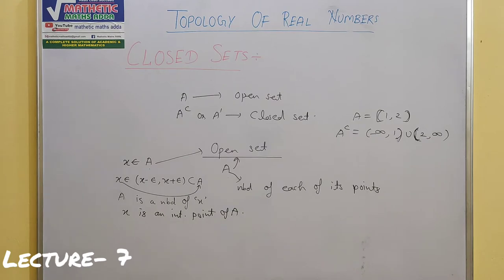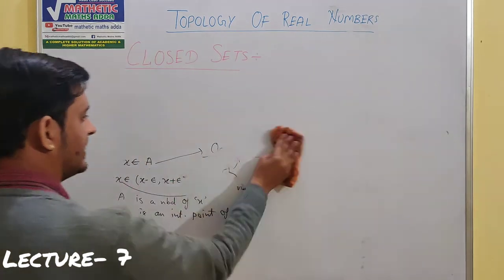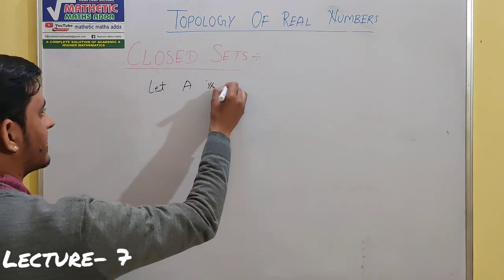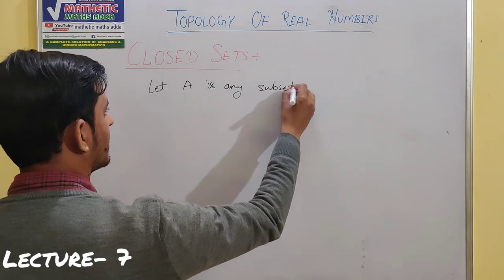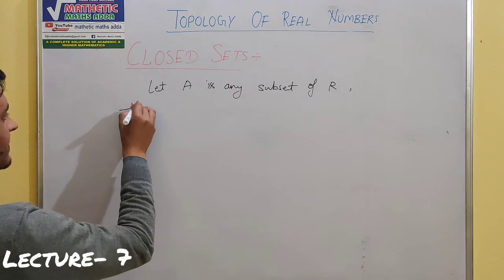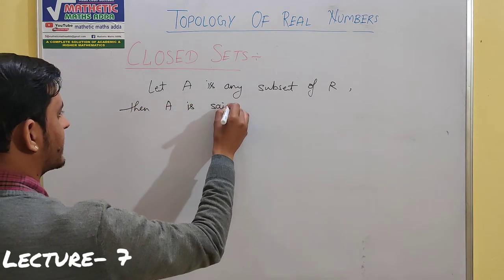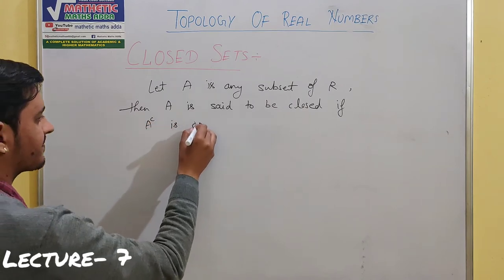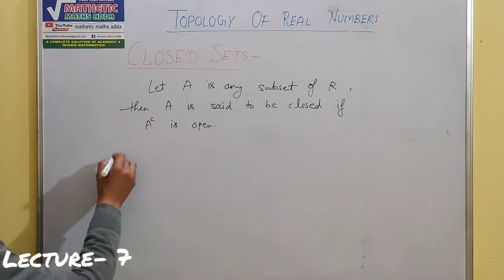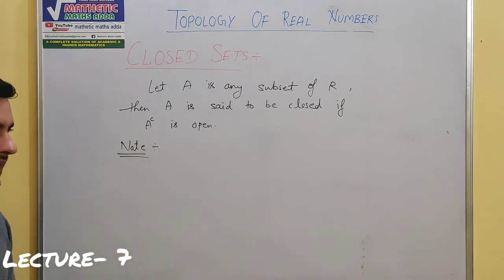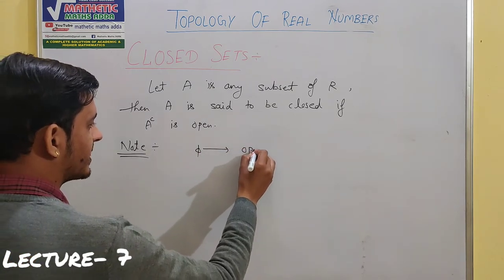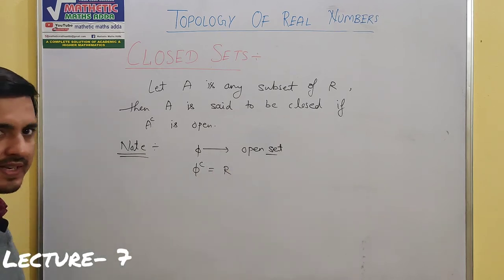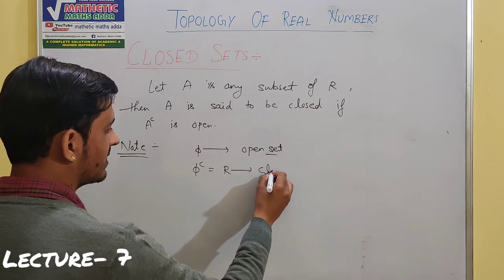So let's state the formal definition: Let A be any subset of R (real numbers). Then A is said to be Closed if the complement of A is Open. Note this important point: Phi (∅) is an Open Set. So if Phi is open, then its complement — which is the Set of Real Numbers R — becomes Closed.